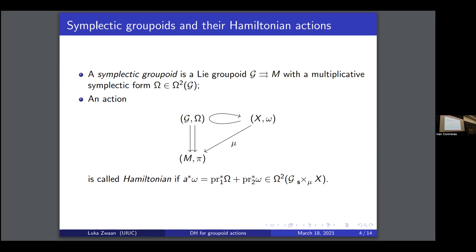Let me quickly explain how this generalizes Hamiltonian group actions. If you have a Hamiltonian group action, you can form the action groupoid with the co-adjoint action. This will be a groupoid over G*. This is isomorphic to the cotangent bundle, so it has a symplectic form, making it a symplectic groupoid integrating the linear Poisson structure. Since this acts on some symplectic manifold with an equivariant moment map, you can define an action by acting by G on the left. This will be a Hamiltonian action in this sense, and so this is how it generalizes group actions.